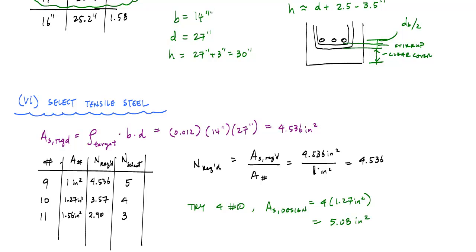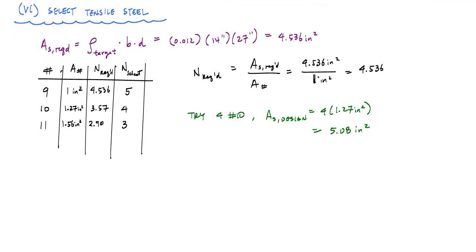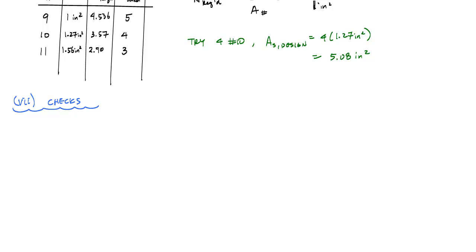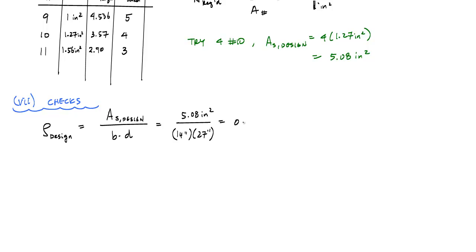We've selected B = 14 in, D = 27 in, H = 30 in, and 4 #10 bars. Now we do basic checks. First, establish ρ_design = AS_design / (B × D) = 5.08 / (14 × 27) = 0.013, very close to our target 0.012. Next, check minimum steel per ACI 10.5.1: ρ_min = 0.0033. Our ρ_design far exceeds that — check.